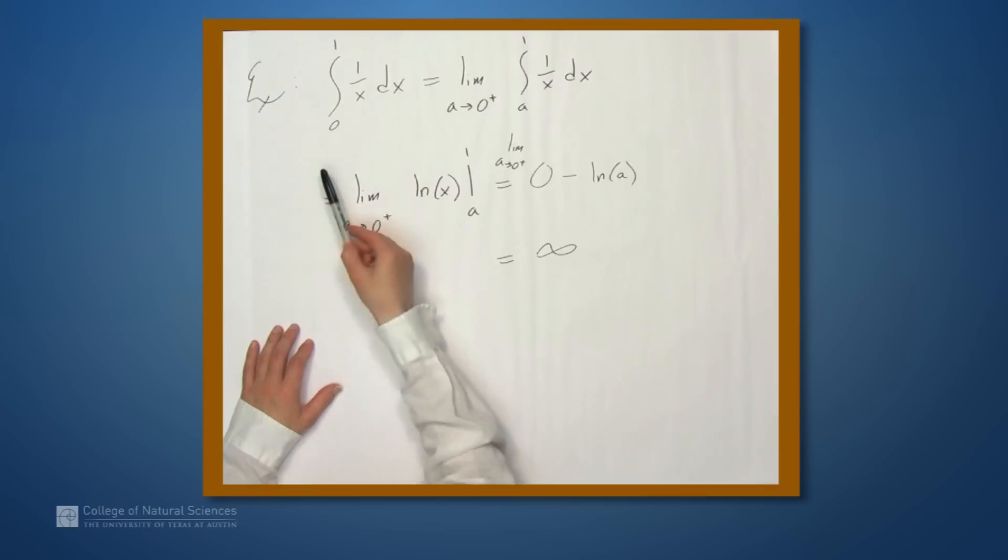So underneath the curve, 1 over x, between 0 and 1, there is, in some sense, infinite area. Let's get another example.